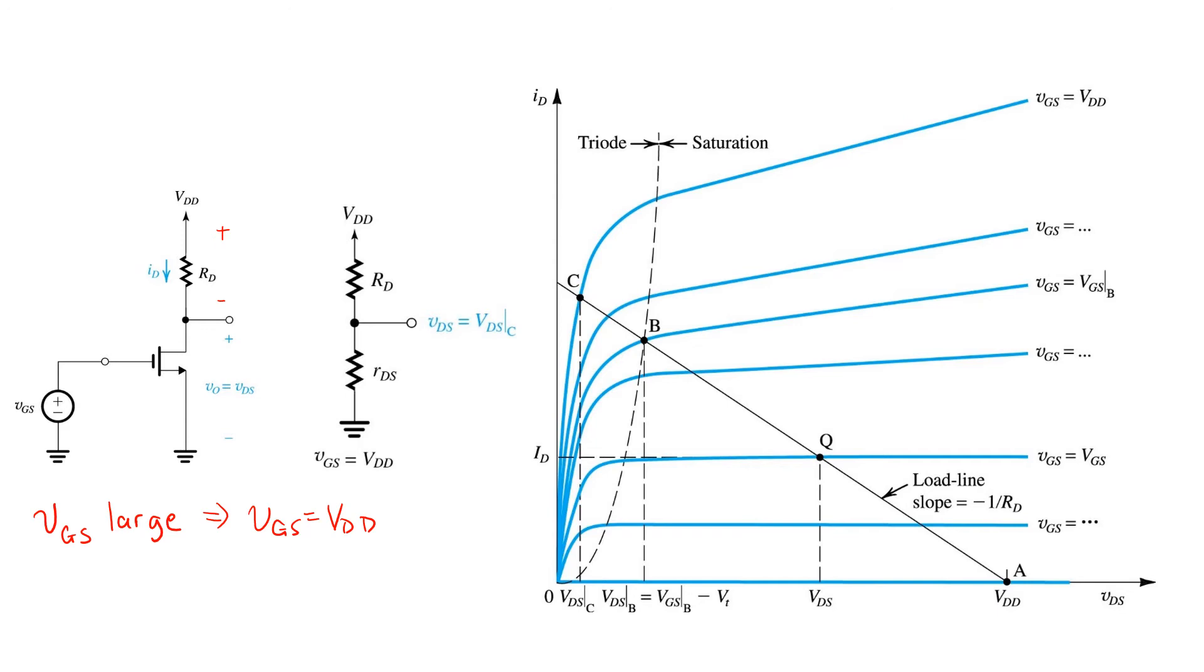So, this then corresponds to this top blue curve in the plot on the right. You see, in this case, that the blue curve intersects the load line at point C,